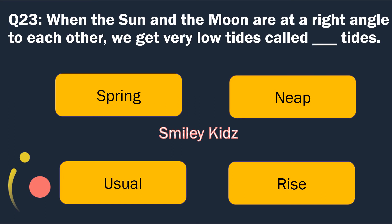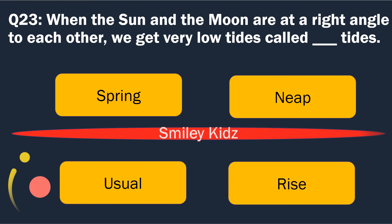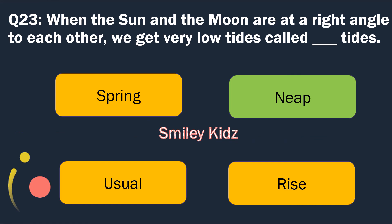Question number 23. When the sun and the moon are at the right angle to each other, we get very low tides called blank tides. Options are: Spring, Neap, Usual and Rise. The right answer is Neap. When the sun and the moon are at right angles to each other, we get very low tides called Neap tides.